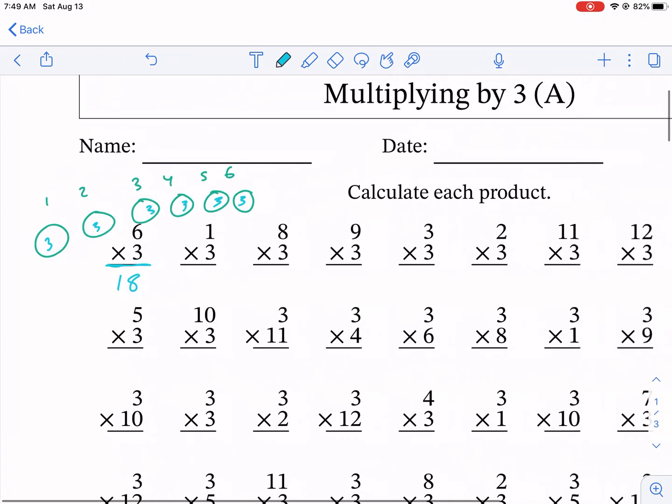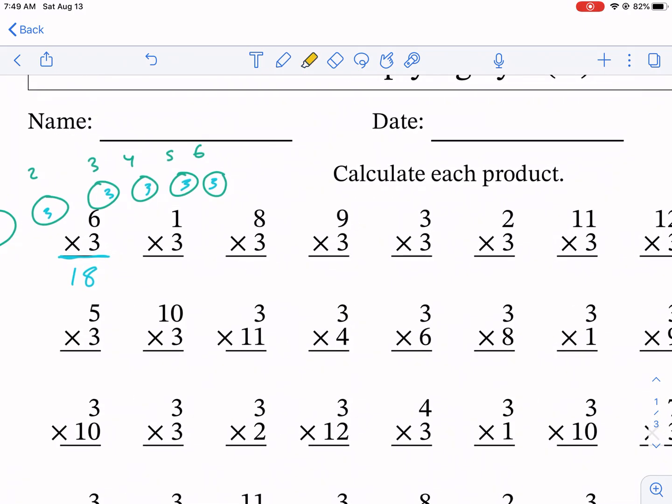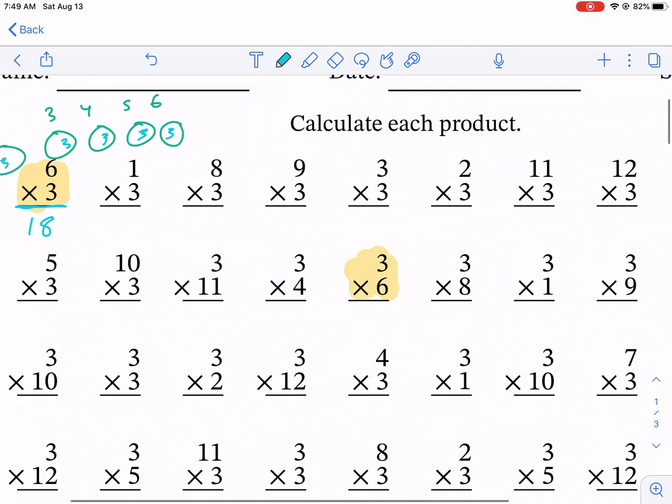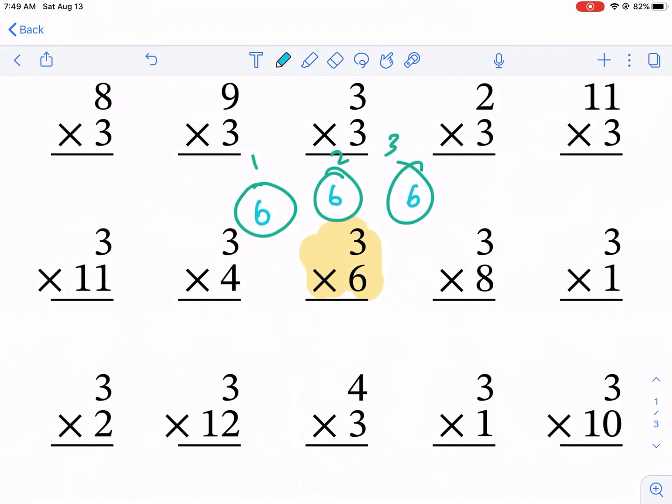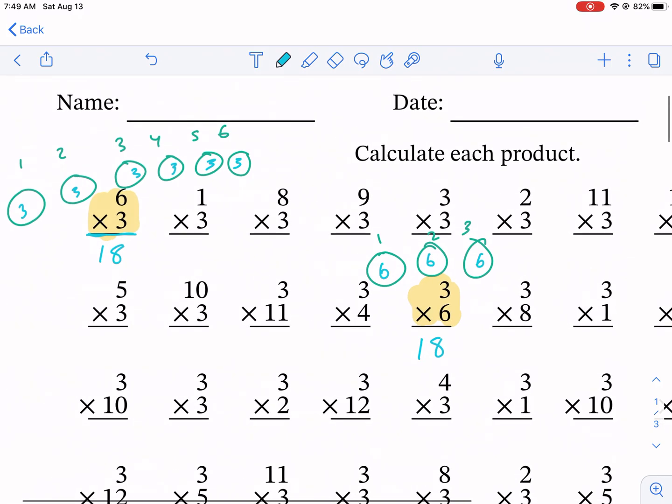Now, another thing I wanted to talk about, if we have 6 times 3, what is going to be the difference between 3 times 6? So slight difference here. Same principle applies. We're going to have 3 groups of 6. So 1, 2, 3, 3 groups, and there's going to be 6 things in each one of those groups. So we do 6 plus 6 is 12 plus 6 is also 18. So 6 times 3, 3 times 6, both the same number.